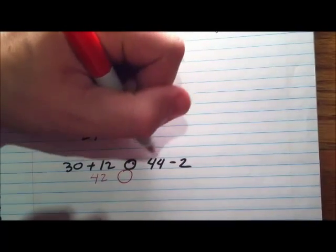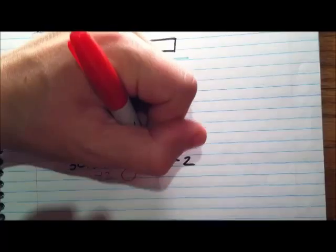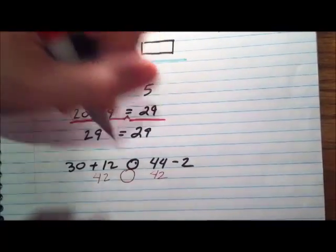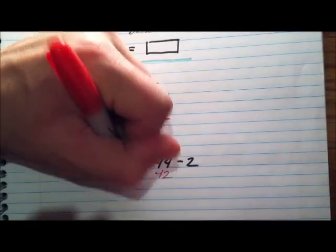Now we can solve this side as well. We can simplify it. We go 44 minus 2, that is 42. So the appropriate symbol to write in the blank would be the equal sign.